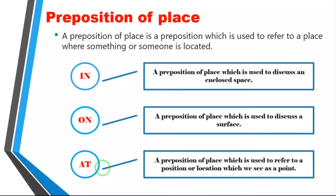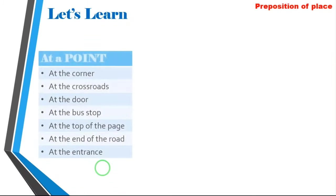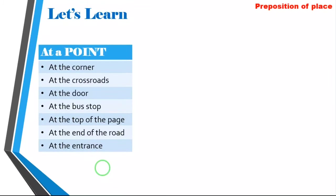Teacher, can you give me an example please? All right, let me give you an example. Let's go to 'at' — a point. At the corner, at the crossroads, at the door, at the bus stop, at the top of the page, at the end of the road, at the entrance. Those are examples of the preposition 'at.'